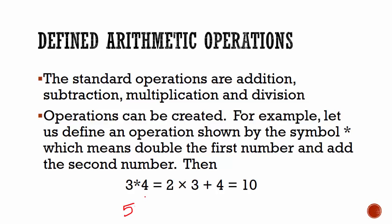Similarly, if we had 5 asterisk 2, then we will get, you have to double the first number, so that will be 5 multiplied by 2, and then you add the second number, which is 2. So we get 5 multiplied by 2 is 10, 10 plus 2 is equal to 12.